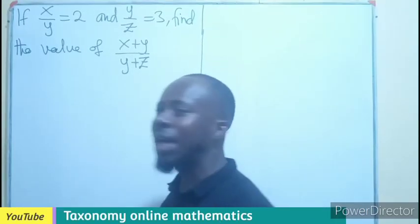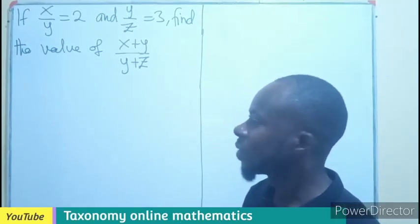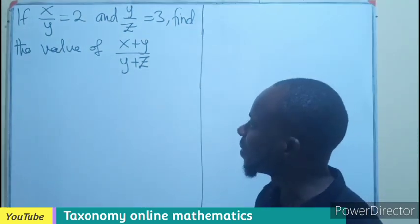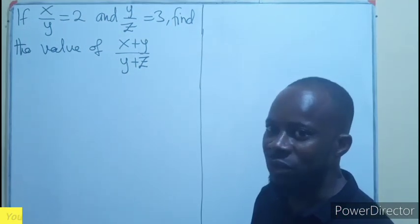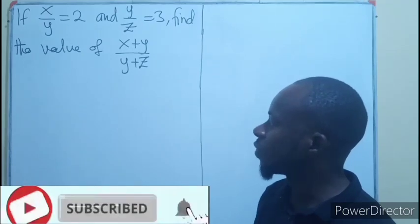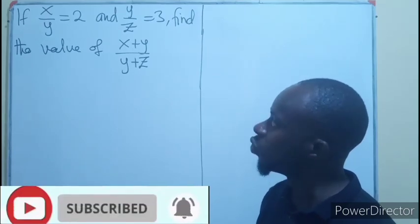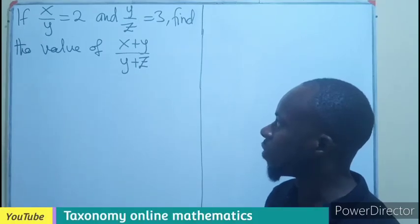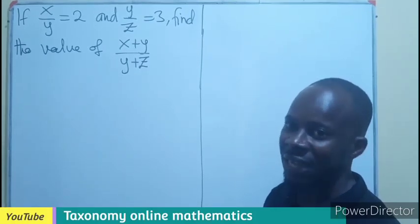Hello, welcome. This is the first question, question 1b of the just-ended WASSCE Mathematics 2023 June. If x over y equals 2 and y over z equals 3, find the value of x plus y divided by y plus z.